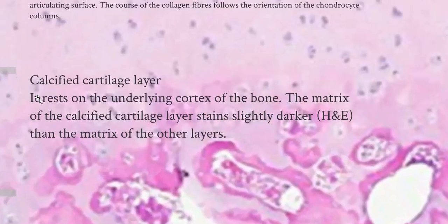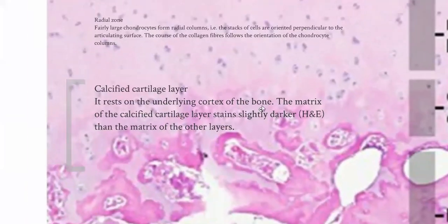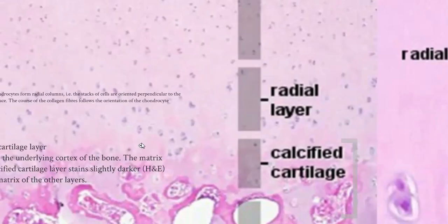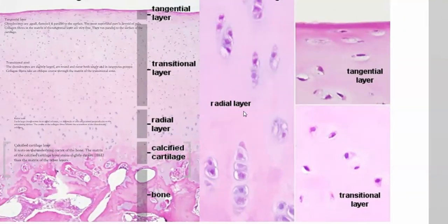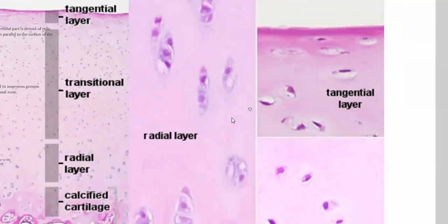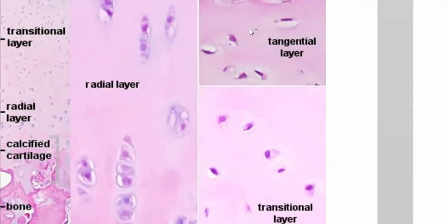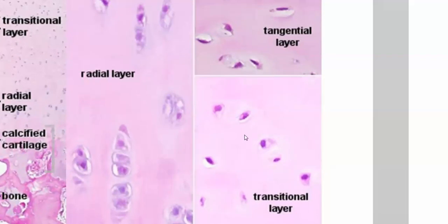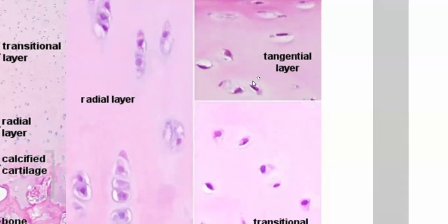The deepest zone is calcified cartilage, which rests on the underlying cortex of bone. Its matrix stains slightly darker than the other layers. In the image: the radial layer is perpendicular, the tangential layer is parallel to the surface, and the transitional layer is between them.